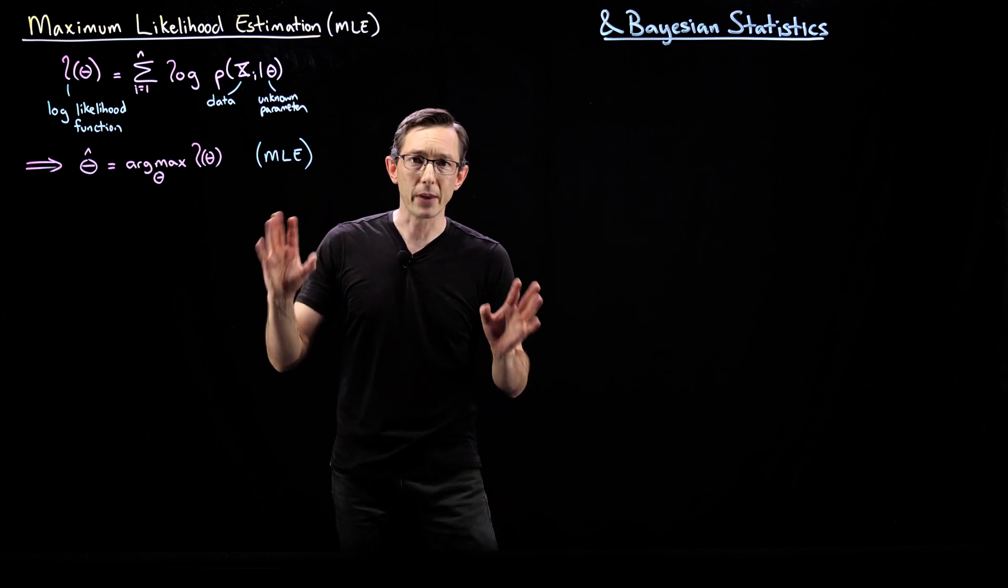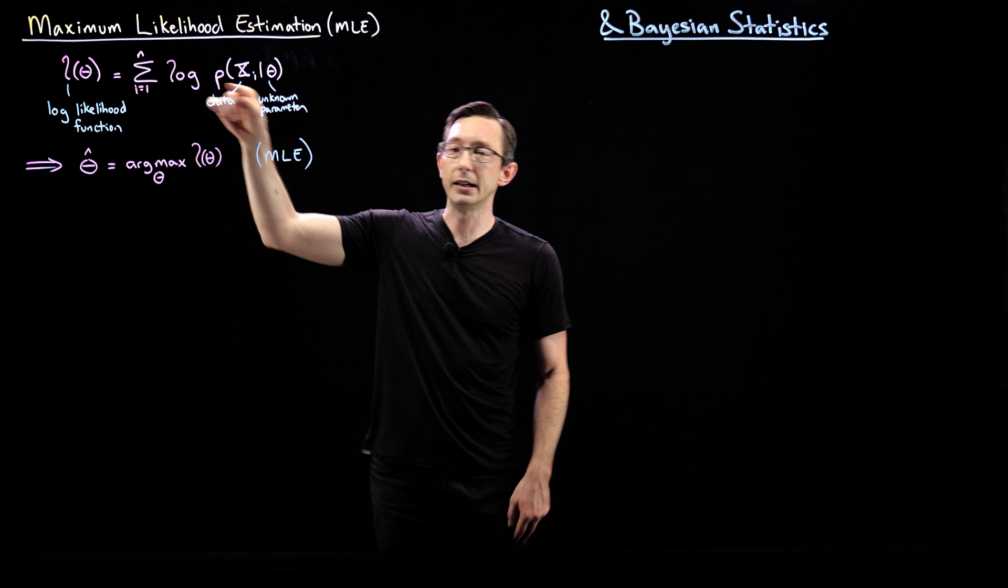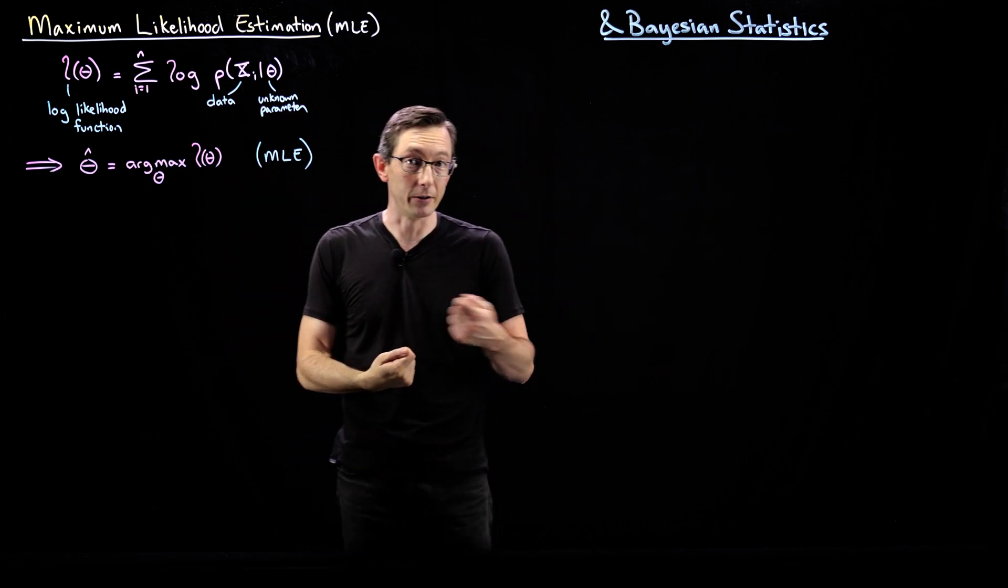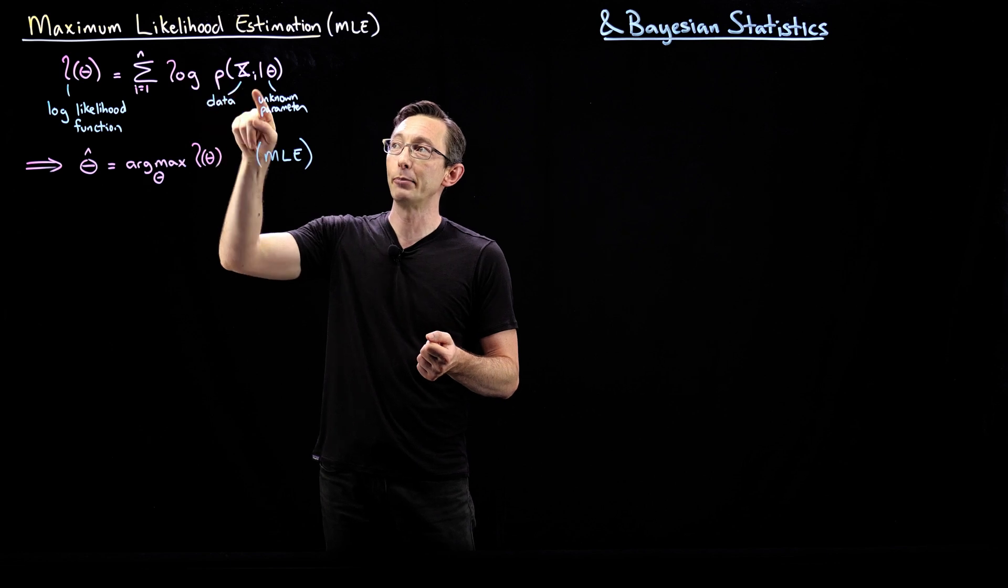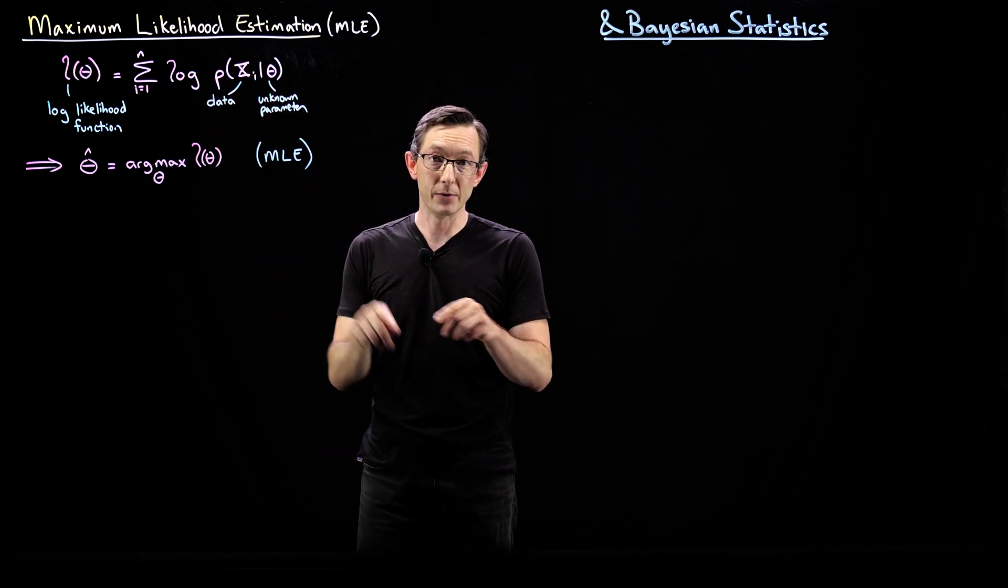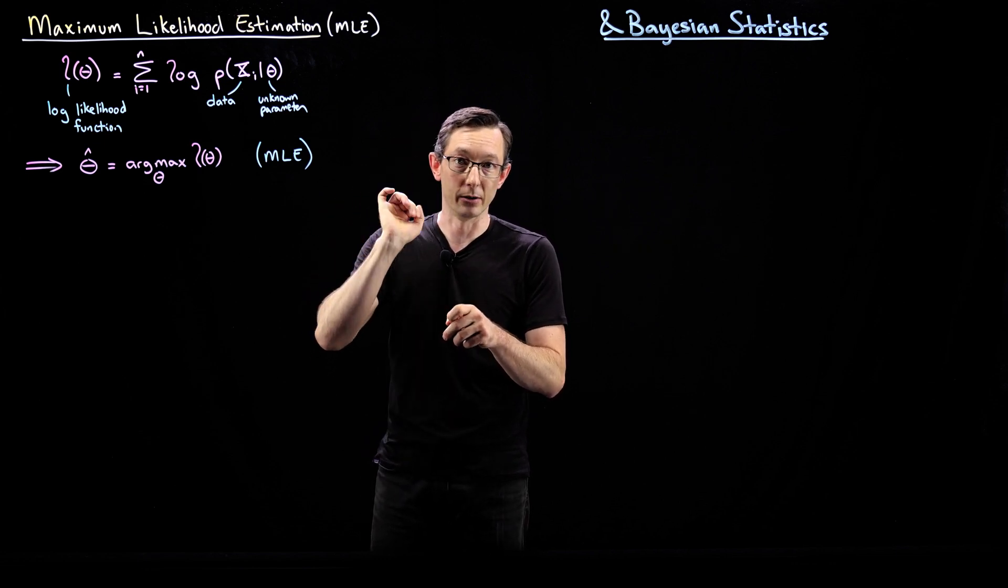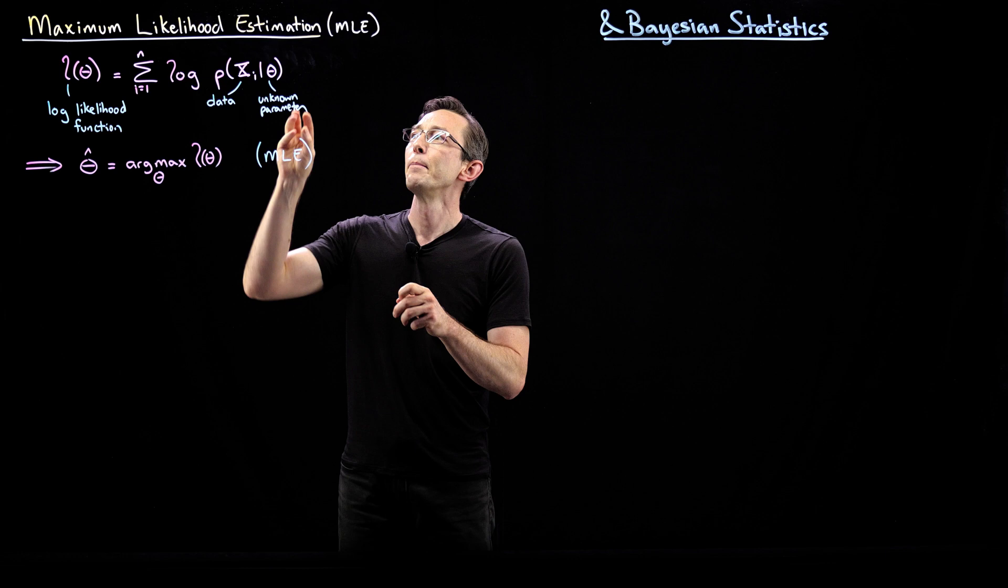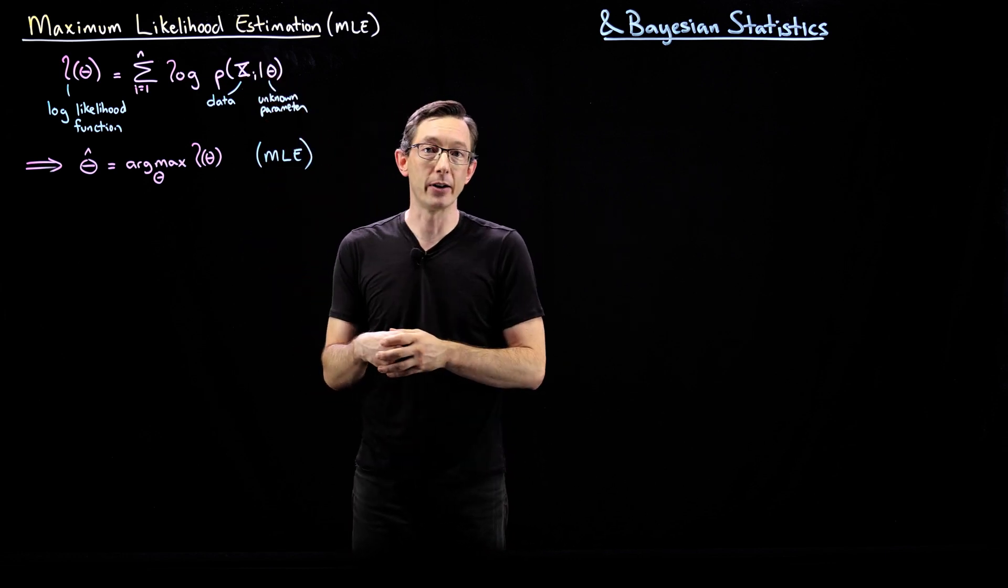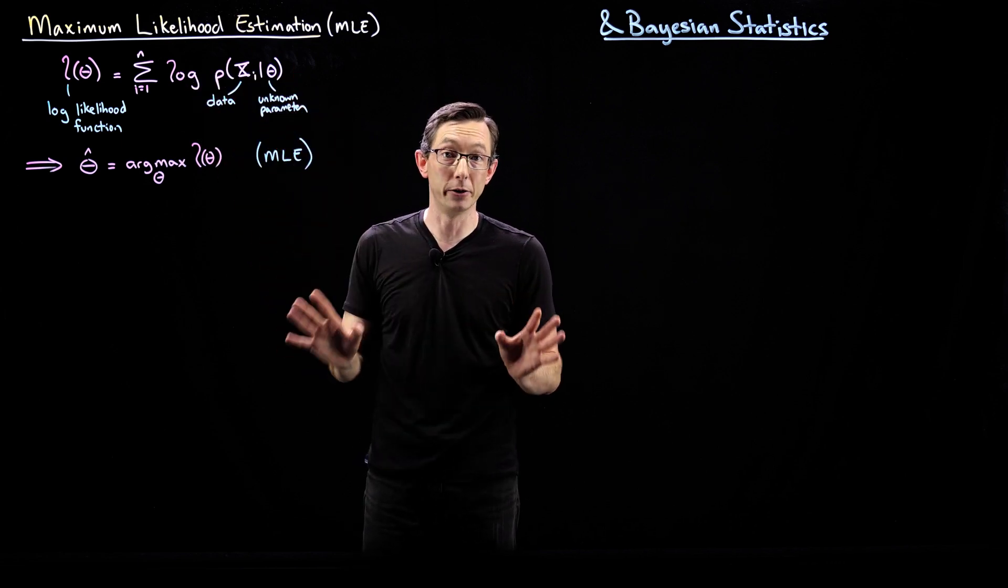Just remember that the maximum likelihood estimation problem, what we do is we take our probability density function and we take the likelihood function. Essentially, we take our PDF and we plug in our measurement data for the variables. So if I have a Gaussian e^{-(x-μ)²/2σ²}, I would take my actual measured data numbers that I collected and plug those in for my variables x. And now I have something that's only a function of my unknown parameters.